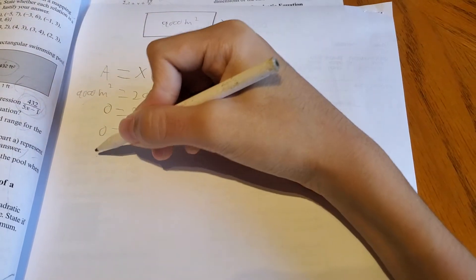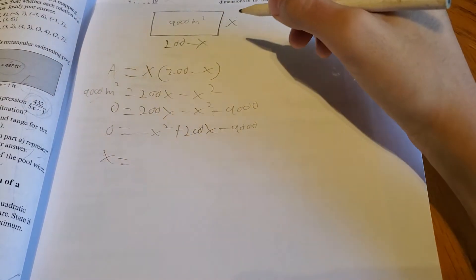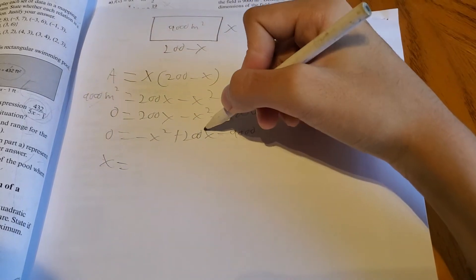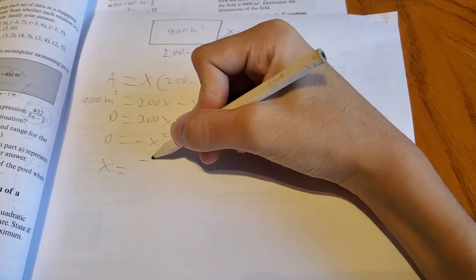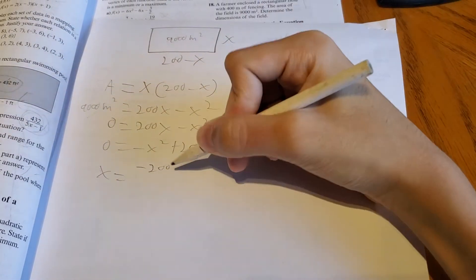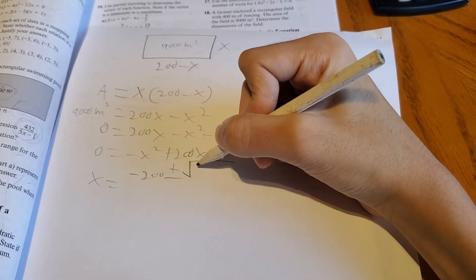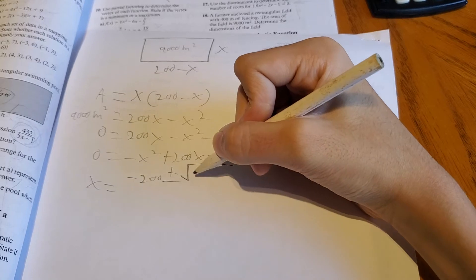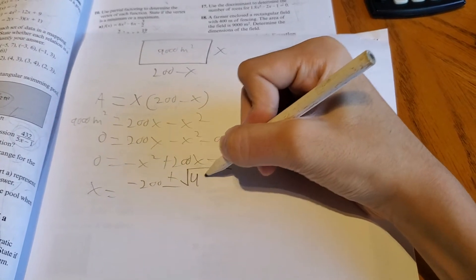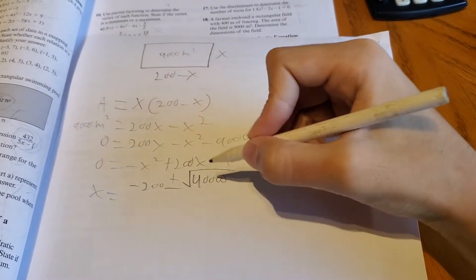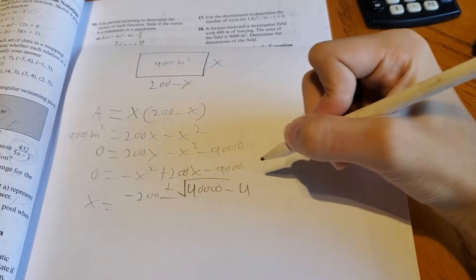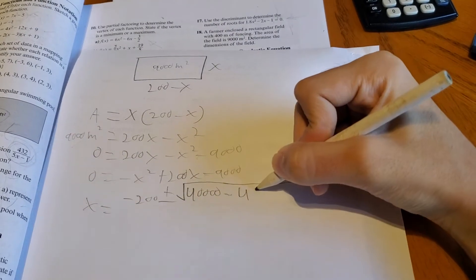So x equals, and then the quadratic formula is negative b, negative 200, plus or minus the root of 200 squared, which is 40,000, minus 4.